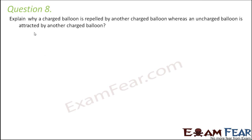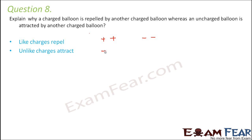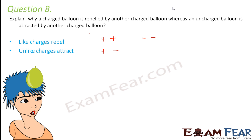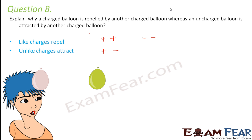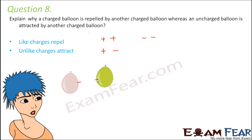Question number 8: Explain why a charged balloon is repelled by another charged balloon whereas an uncharged balloon is attracted by a charged balloon. Like charges — two positively or two negatively charged objects — repel each other, while unlike charges attract each other. When you charge a balloon by rubbing it on your hair and bring it near another balloon charged the same way, both balloons are negatively charged. Since they are like charges, they repel and move away from each other.